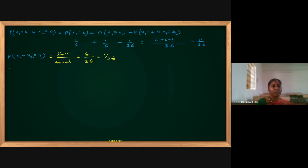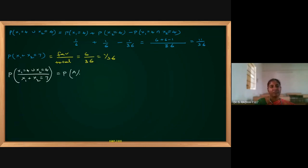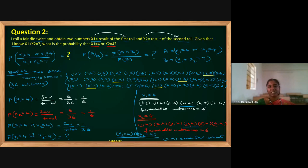The final answer is of the form: probability of (x1=4 ∪ x2=4) given (x1+x2=7), which equals P(A|B). Using the conditional probability formula: P(A|B) = P(A ∩ B) / P(B). We need to find the numerator — the intersection of the union outcomes with the event B.